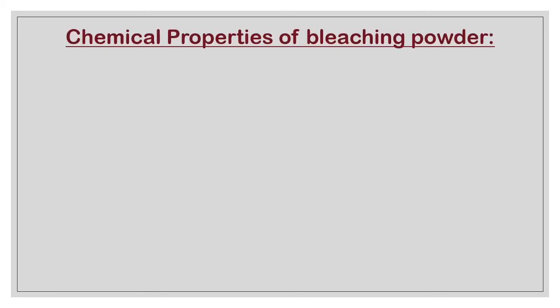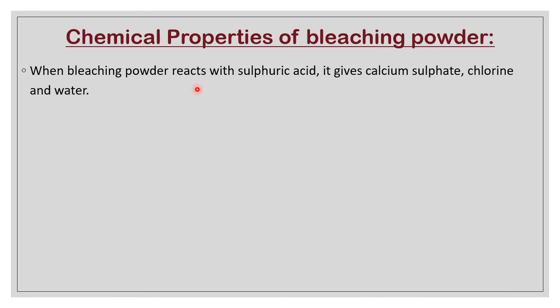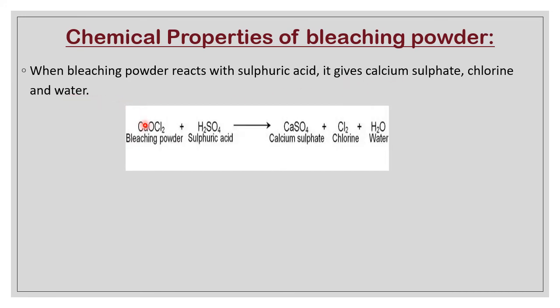Chemical properties of bleaching powder: when bleaching powder reacts with sulfuric acid, it gives calcium sulfate, chlorine, and water. Chemically: calcium oxychloride plus sulfuric acid. Whenever an acid reacts with bleaching powder, the corresponding salt is formed. If you use sulfuric acid, the salts formed are sulfates. If you use hydrochloric acid, salts formed are chlorides. If you use nitric acid, salts formed are nitrates. Here we are using sulfuric acid, so calcium sulfate (CaSO₄) is formed, along with Cl₂ and H₂O.